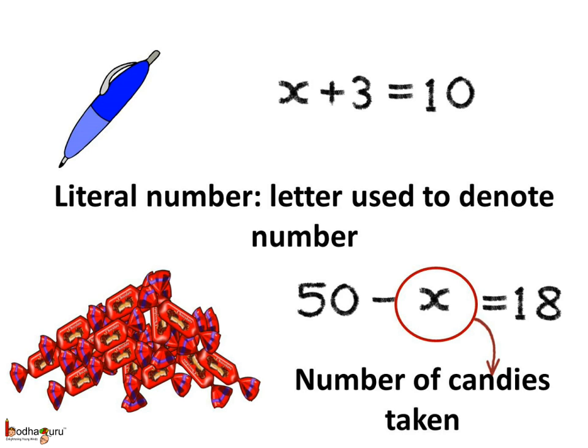Here in these two cases, we used x to denote the unknown numbers. So when we use letters to denote numbers, those letters are called literal numbers. Here we have x, which is a literal number.